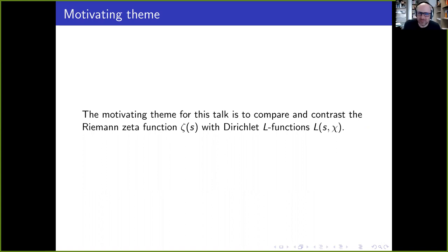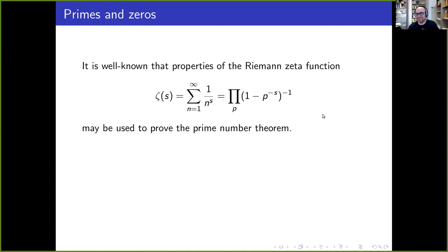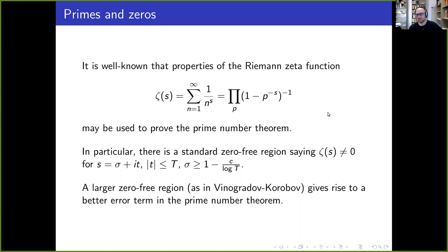The theme to motivate this overall talk today, at least the beginning part, is to compare and contrast the Riemann zeta function with Dirichlet L-functions. Going way back in history, it's well known that properties of the Riemann zeta function can be used to prove the prime number theorem. There's a standard zero-free region of distance one over log T away from the line one.